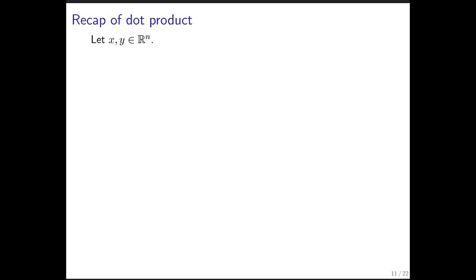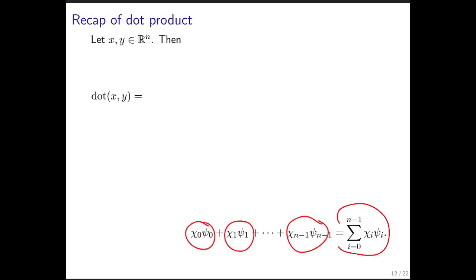There's a relation between the dot product and the length of a vector. Let's recall how the dot product is computed. We multiply corresponding components together and then add them.